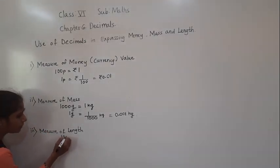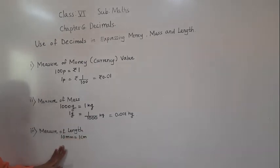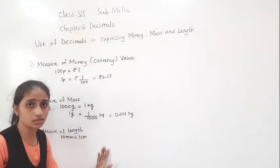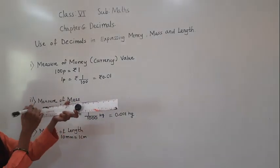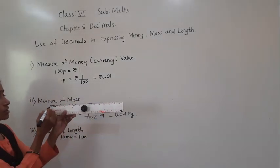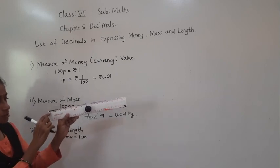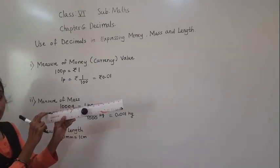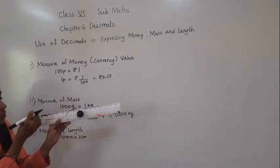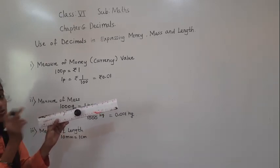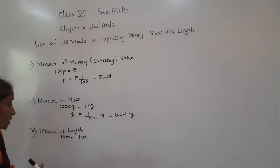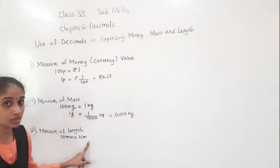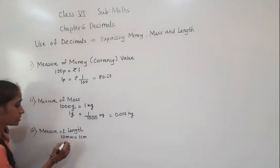10 mm is equal to 1 cm. If you take your scale, from 0 to 1 cm there are 10 small divisions, so each small division is 1 mm. Therefore 10 mm is equal to 1 cm.